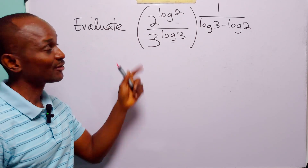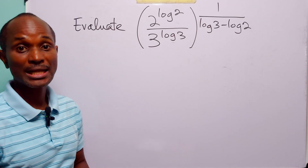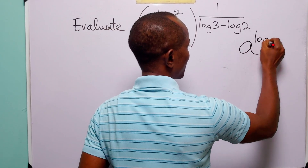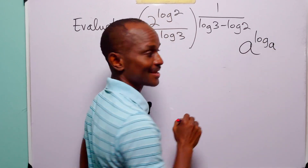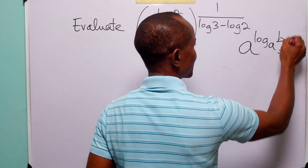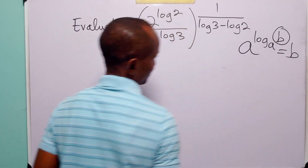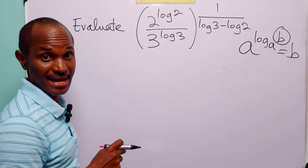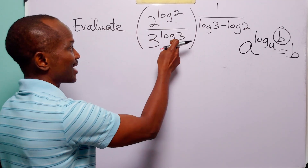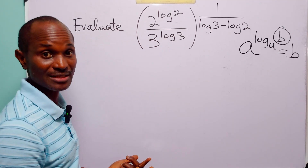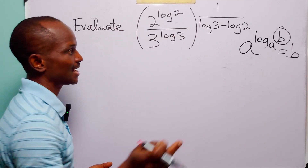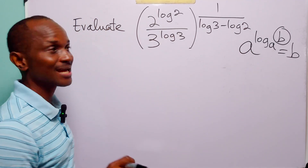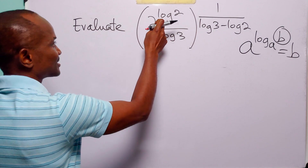Hello and welcome. Let us find the value of this expression. Let us remember that a to the power log base a of b is equal to b. Since these logarithms are given in base 10 — when we write log without specifying the base it means we are working in base 10, common logarithms — let our a be equal to 10.